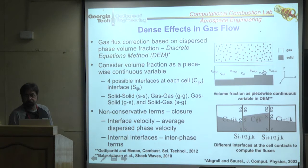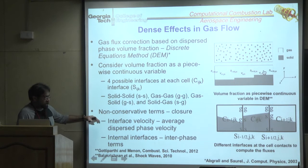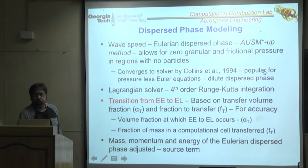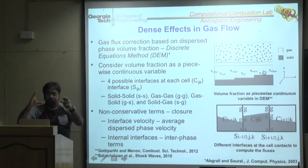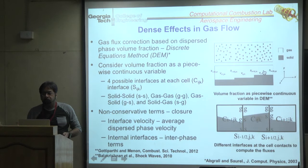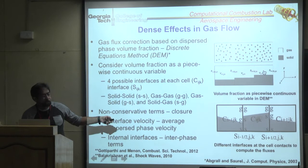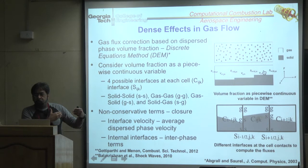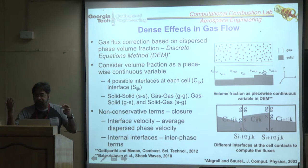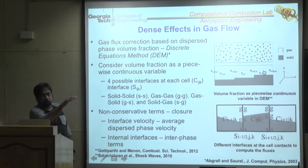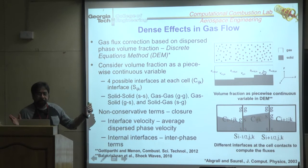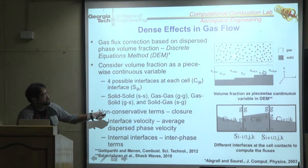In the Lagrangian framework, particles are tracked anywhere in the domain; at any given cell and time you know how many particles there are with different sizes. You sum up all of them to get a net volume fraction. The gas flux is then reduced proportionally to account for the fact that 20% of the cell covered by particles reduces the effective volume mass flux.